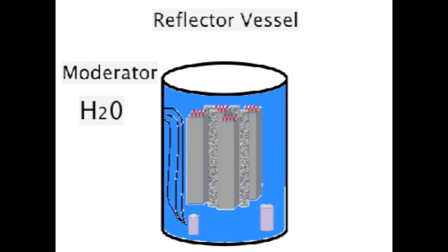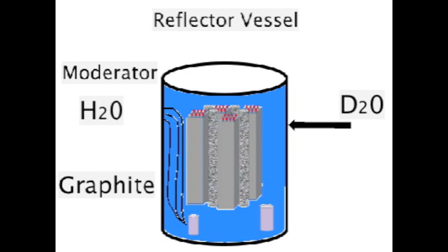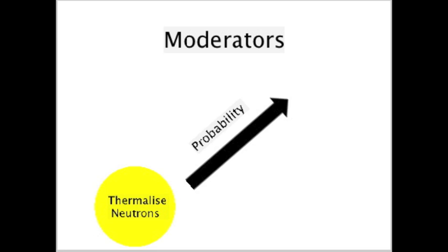Moderators such as H2O, D2O, and graphite are used to thermalise neutrons and reflect neutrons back into the core in order to increase the probability of fission reaction.